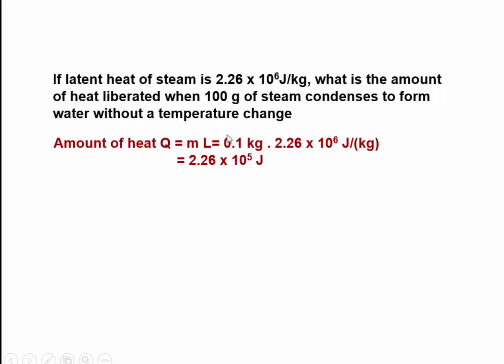Mass is 100 grams, or 0.1 kilogram, times latent heat of vaporization, which is 2.26 times 10 to the 6 joules per kilogram. That gives 2.26 times 10 to the 5 joules.